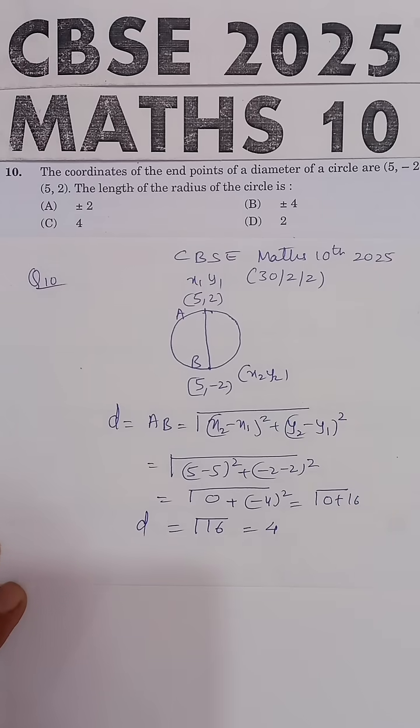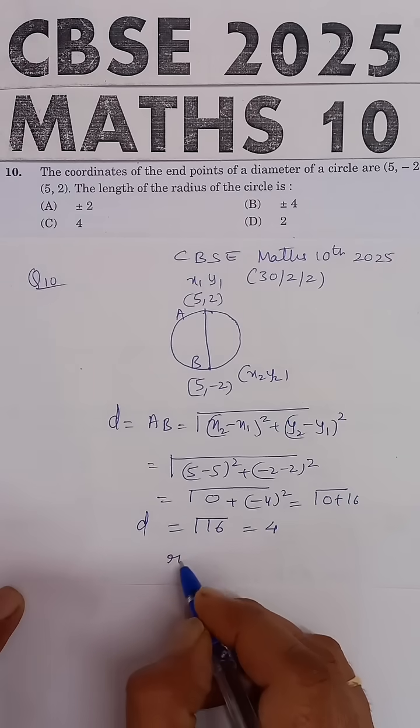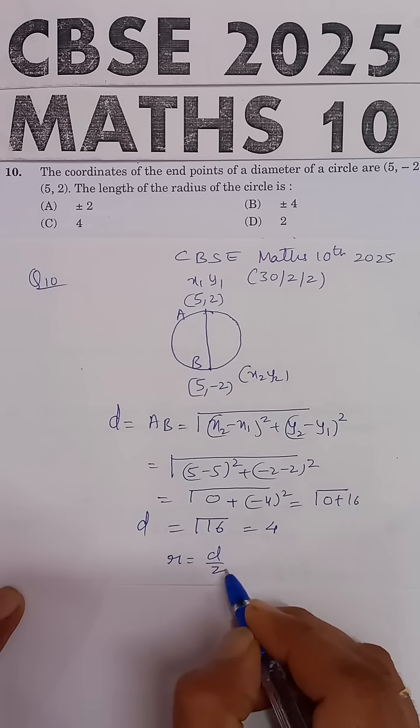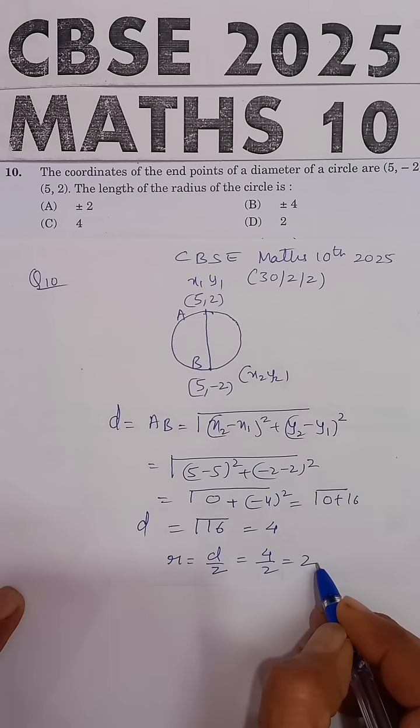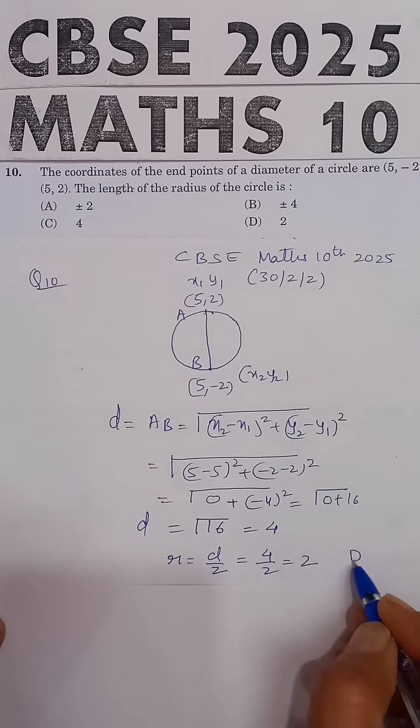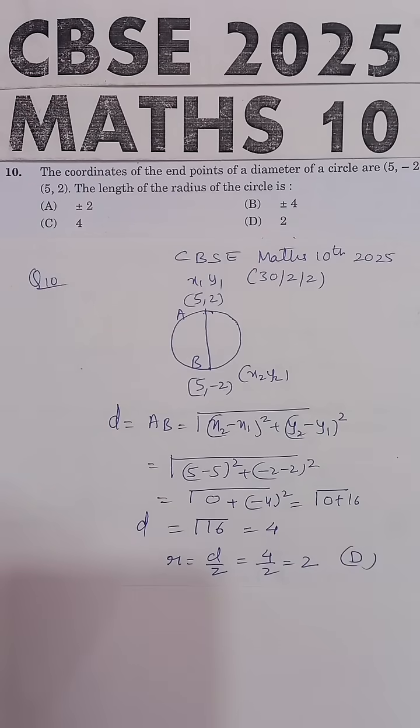But we have to find the radius. The radius is diameter divided by 2, which is 4 divided by 2, which equals 2. And this is given in option D. So option D is the correct answer.